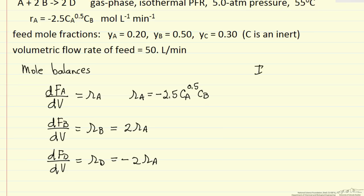We need initial conditions, and that means at V equals 0 we need the molar flow rate of A, so it's the mole fraction of A entering times the total flow rate entering, and this mole fraction is 0.20. For the molar flow rate of B initially, again mole fraction of B times the total molar flow rate, and this is 0.50. The molar flow rate of D is 0 initially.